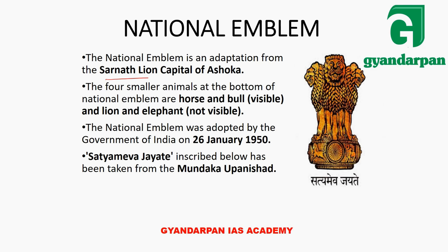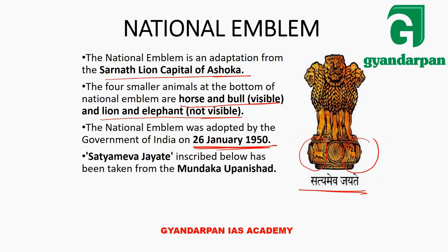The National Emblem is taken from the Sarnath Lion Capital of Ashoka. There are 4 small animals — horse on the left-hand side and bull on the right-hand side are visible, while lion and elephant are not visible as they are on the back side. The National Emblem was adopted on 26th January 1950. Our national motto is 'Satyameva Jayate,' written in Devanagari script.